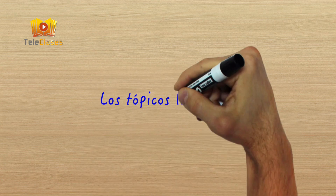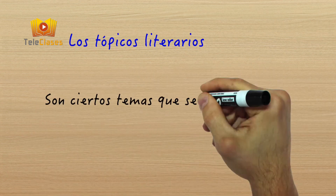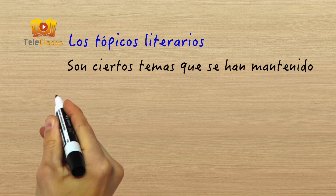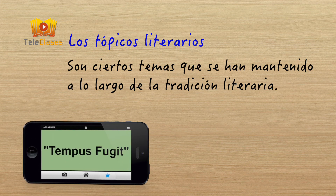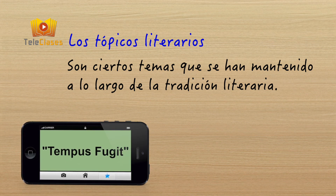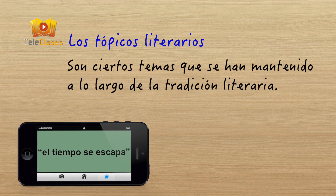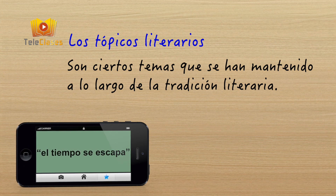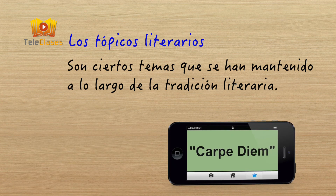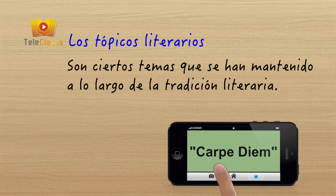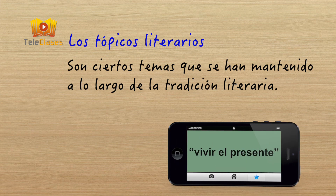Los tópicos literarios son ciertos temas que se han mantenido a lo largo de la tradición literaria y que van apareciendo y reapareciendo a través de la historia. Ejemplos de ello son Tempus fugit, que es la idea de que el tiempo se escapa, y Carpe diem, que expresa la idea de aprovechar el día y vivir el presente.